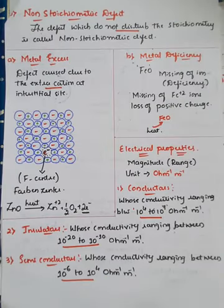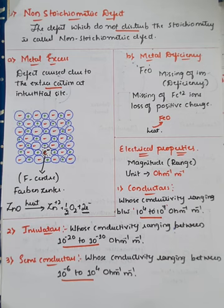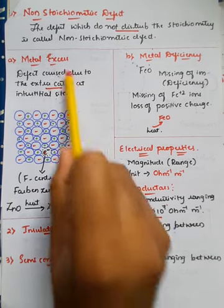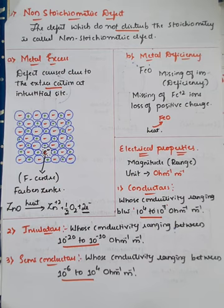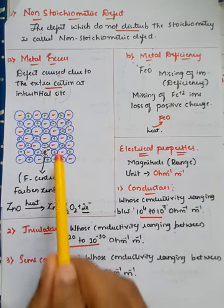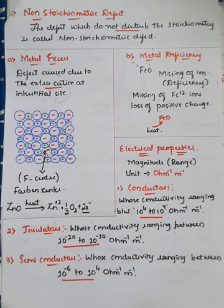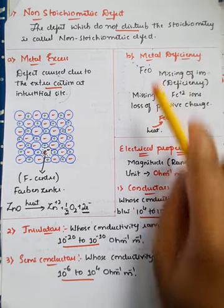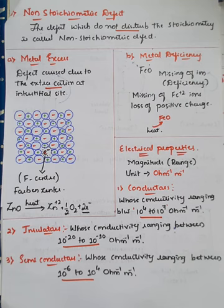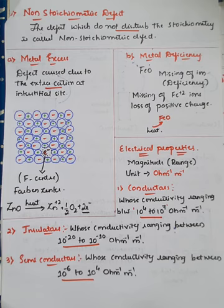We also studied the non-stoichiometric defect. Non-stoichiometric defects are types of defects which do not disturb the stoichiometry of the crystal system. Out of non-stoichiometric defects there were two types: one is metal excess defect, caused due to extra cation — due to removal of one electron it looks like there is one extra cation and a presence of empty space called the F-center (Farben center). In metal deficiency defect, there is a missing of positive ion, and loss of positive charge leads to formation of metal deficiency defect.